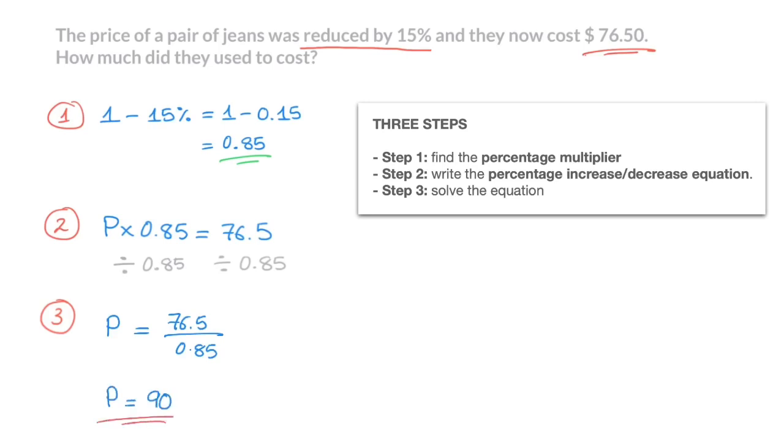And that's the answer. And to state our final answer, we can go ahead and say that these jeans used to cost $90. And there we have it. We now know how to solve reverse percentage problems, and that's it for this tutorial.